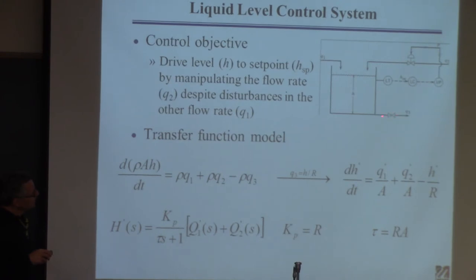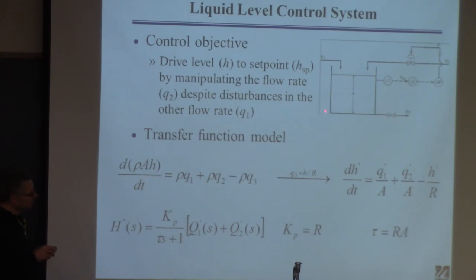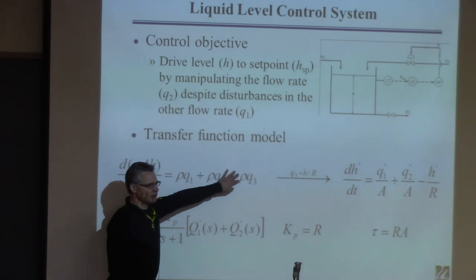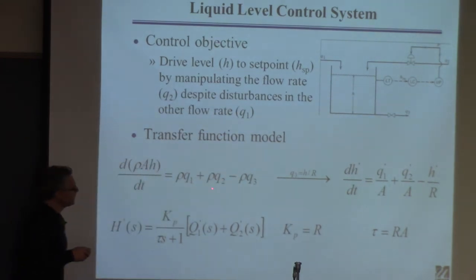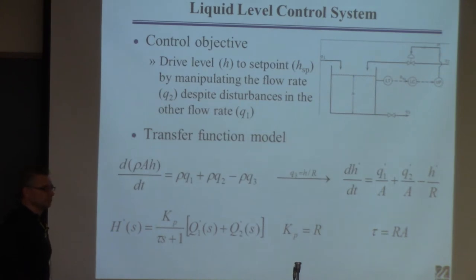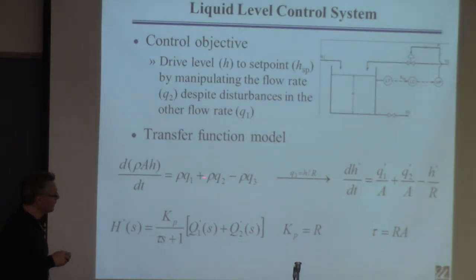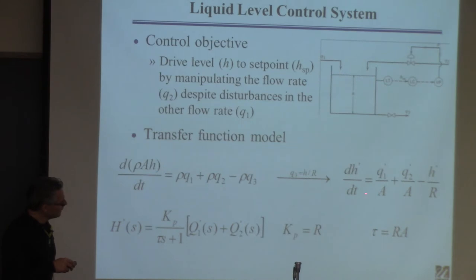The way to think about the problem is that Q3 is a constant — it would be better with a pump to keep Q3 fixed, since gravity-driven flow would change with head. So H changes, Q1 changes, Q2 changes, but Q3 does not change. When you find the deviation model by subtracting the steady-state equation, Q3 drops out. Density cancels, divide by A, and substitute the linear relationship for gravity-driven outflow Q3 = H/R. I've just put primes on the variables to make a deviation model.